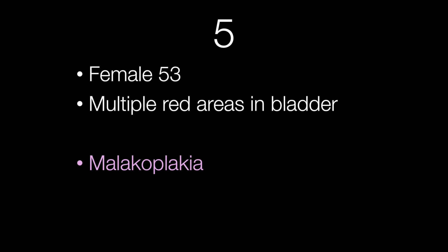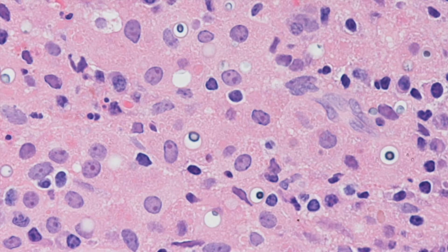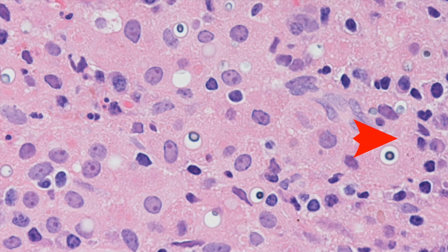The final case was an example of malakoplakia. This is diagnosed by the presence of von Hansemann histiocytes — these are the pink cells with abundant cytoplasm — and the Michaelis-Gutmann bodies that look like bullseyes.